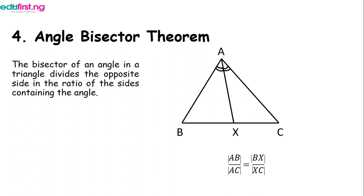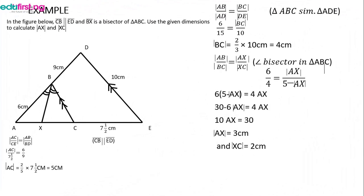All of this can be better understood with an example. In the figure, line CB is parallel to line CD, and line BX is the bisector of angle ABC. Using the given dimensions, we need to calculate AX and XC. We have two triangles: triangle ADE and triangle AEC, and we need to find lines AX and XC.